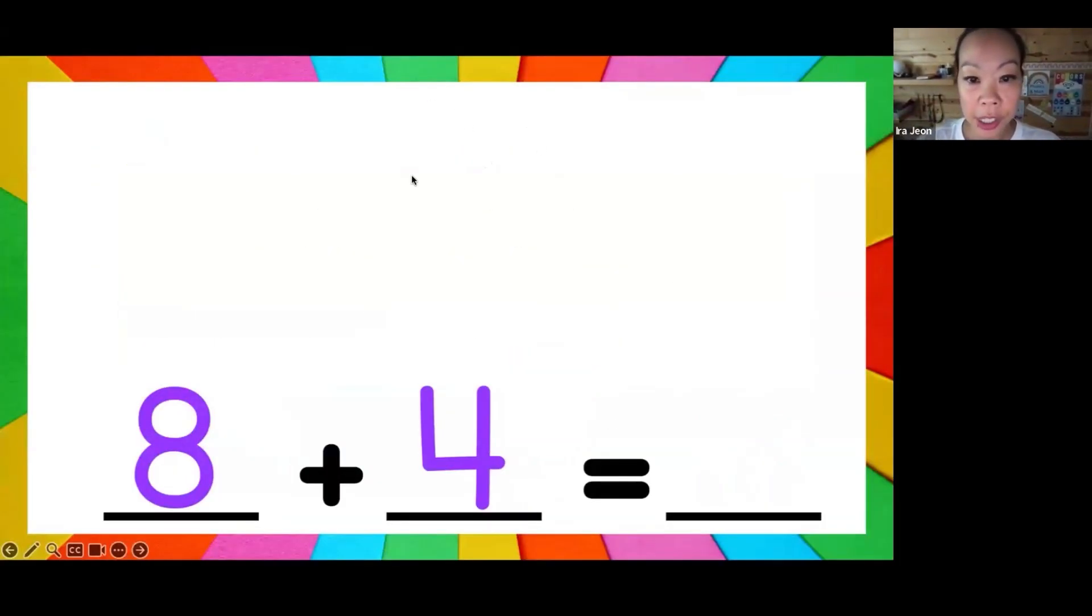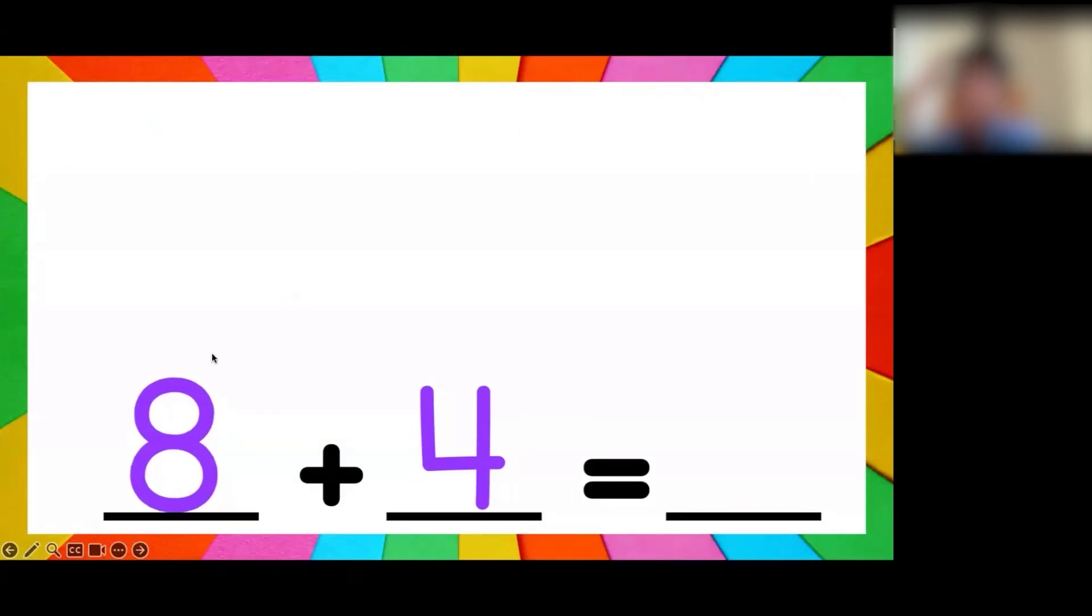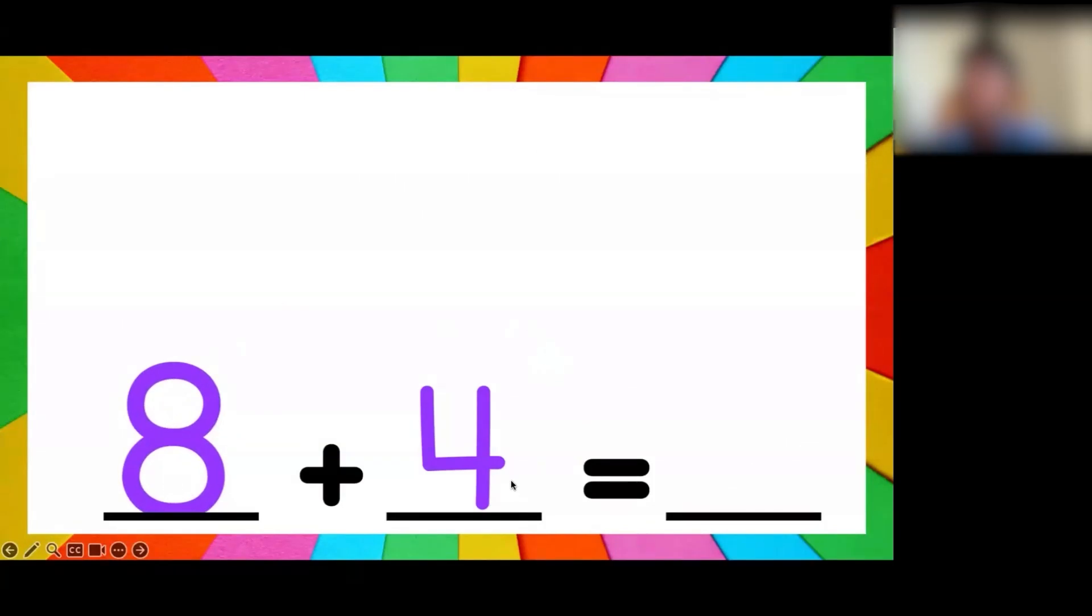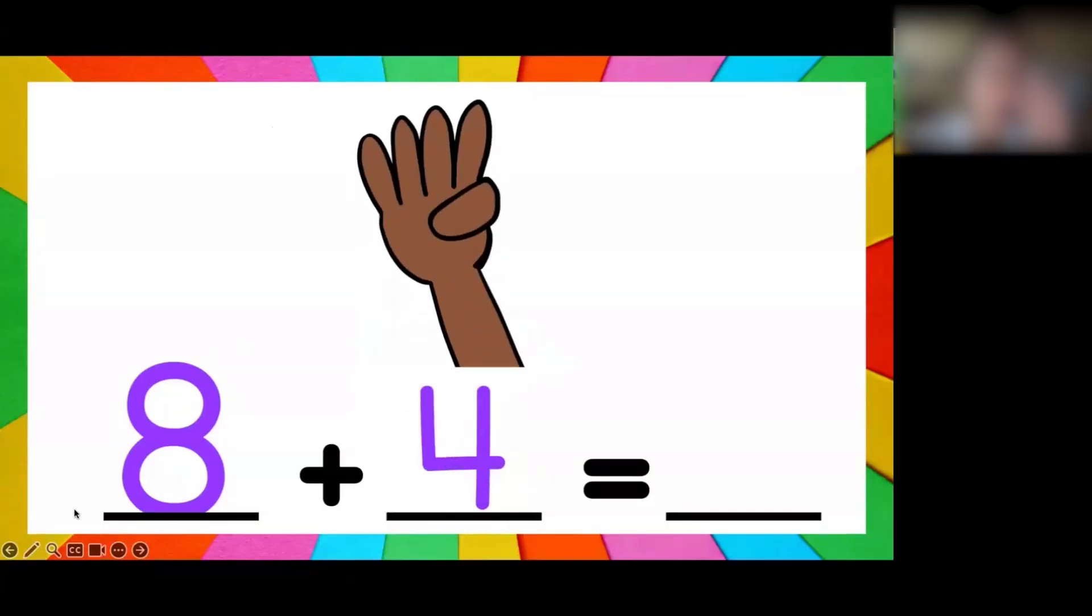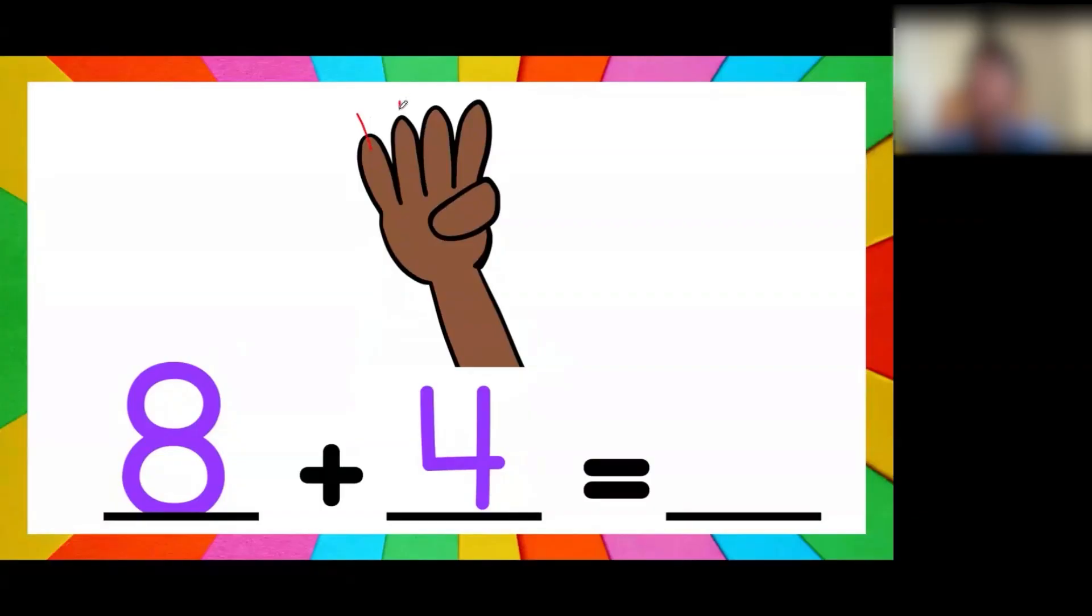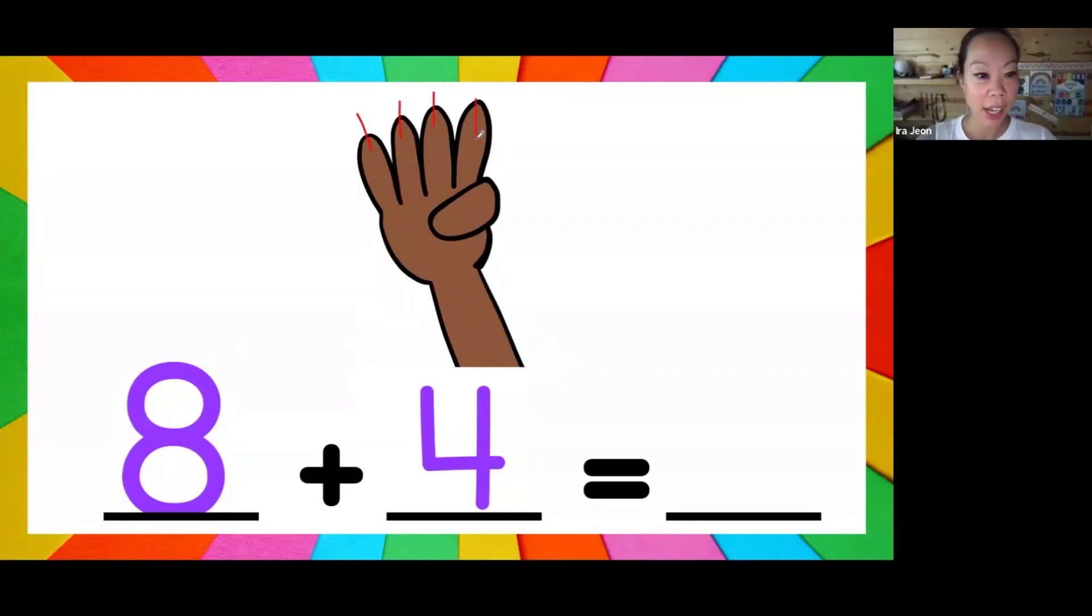Okay, let's try it together. Who can tell me what should I do over here? Yes, Arish, what number should I count on from here? Eight, eight is bigger. So now what are you going to do? Go get some four, good. So after 8 is: nine, ten, eleven, twelve. Good, everybody got 12?